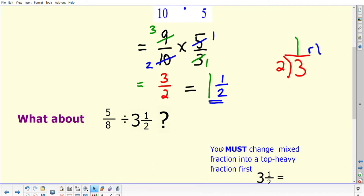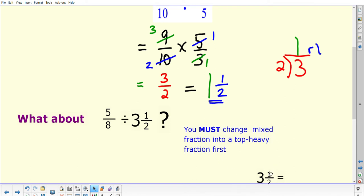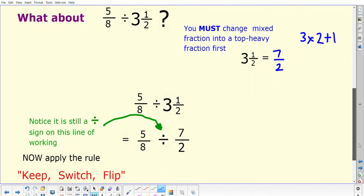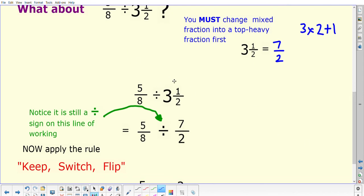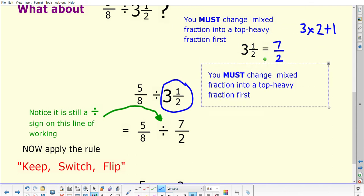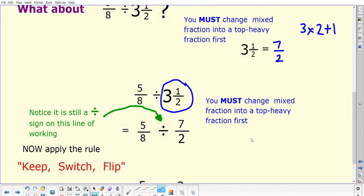So we're going to be using the same rule. We're having to change our mixed fraction into a top heavy fraction first of all. So just to remind us how to do that, remember that you do the whole number, in this case the 3, times by the bottom number, the denominator, and then you add on the top number, and that tells us in this case that we have got 7 of these halves. So what we're going to do is we're going to take the 5 over 8 divided by 3 and a half, and we are writing the 3 and a half now as 7 over 2. So that's the first thing that we have had to do, which is change the mixed fraction into a top heavy fraction first.